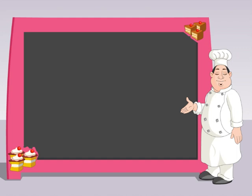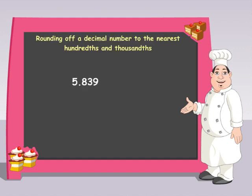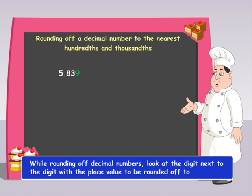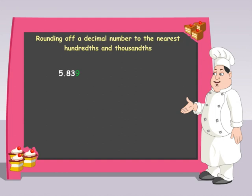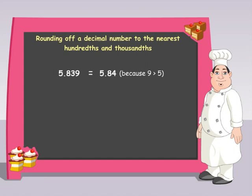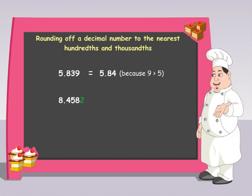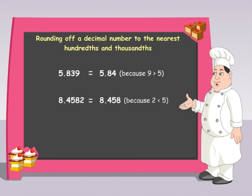Similarly, we can round off decimal numbers to the nearest hundredth and thousandth too. Simply look at the digit next to the place value to be rounded off. 5.839 rounded off to the nearest hundredth becomes 5.84. And 8.4582 rounded off to the nearest thousandth becomes 8.458.